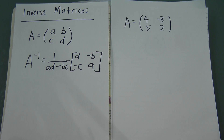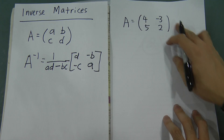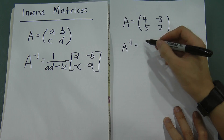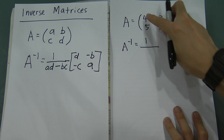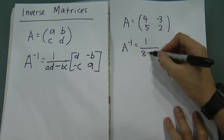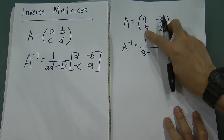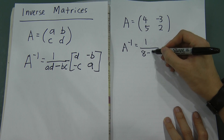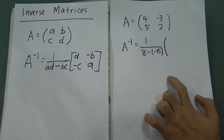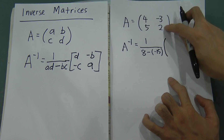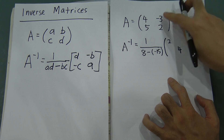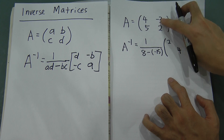Now let's do one example. Given this matrix A, we want to find the inverse of A. We get 1 over AD: 4 multiplied by 2, minus BC: negative 5 multiplied by negative 3, which gives negative 15. Then we change places — 2 and 4 swap to become 2, 4 — and these two positions add a negative.